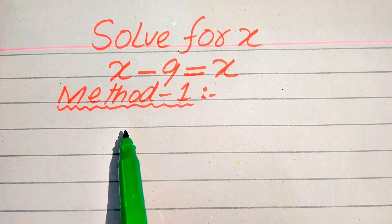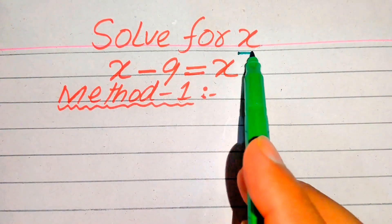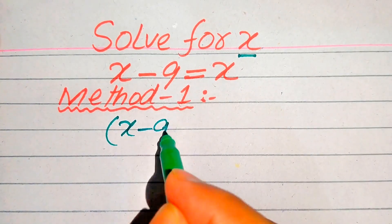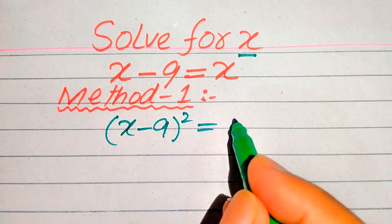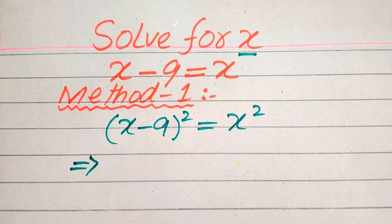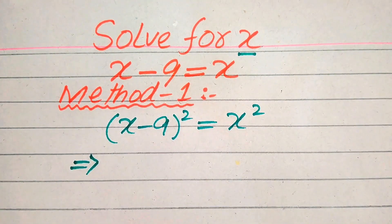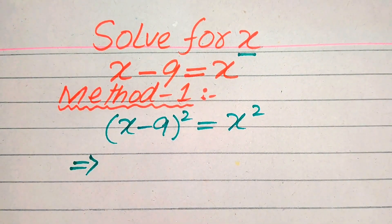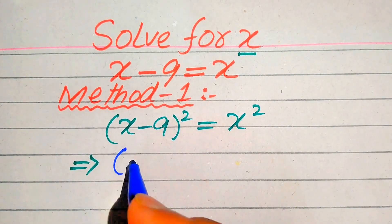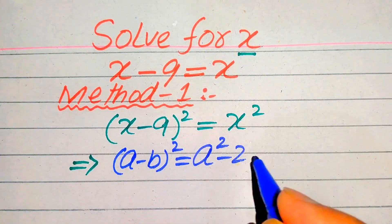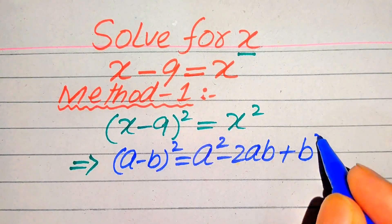Here in the first method, in order to find the value of x, we need to take the squaring on both sides of this equation. After taking squaring it will be written as x minus 9 squared equals to x squared. Now in the next step we apply the algebraic formula on the left hand side. We first state this formula: if we have a minus b whole square it is equals to a squared minus 2 times of a b plus b squared.